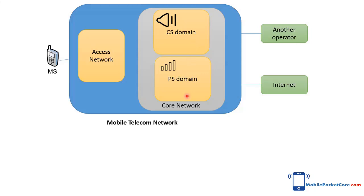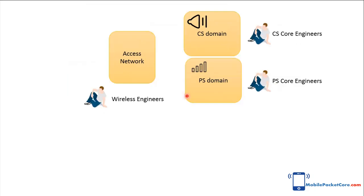There are a set of telecommunication engineers who operate every part of the Mobile Network. Wireless engineers operate the Access Network, while CS Core engineers operate the CS Domain, and PS Core engineers operate the PS Domain.